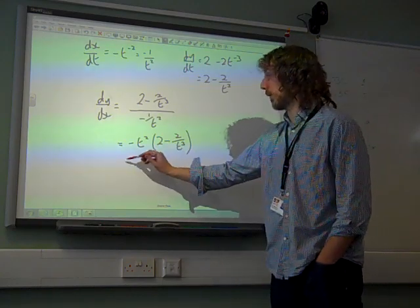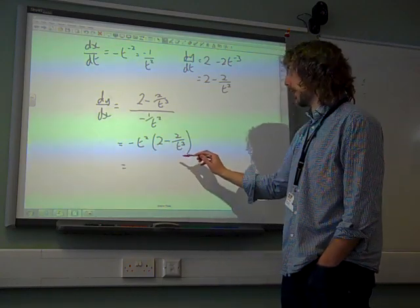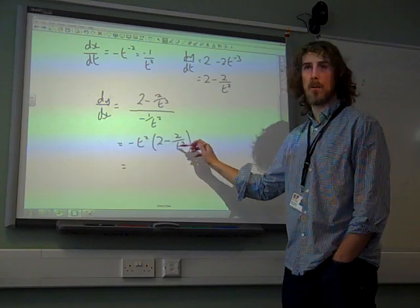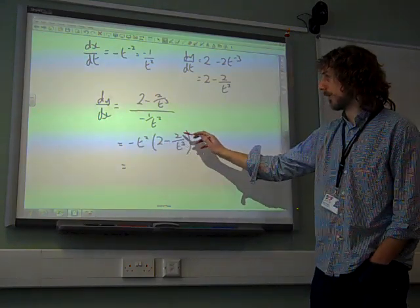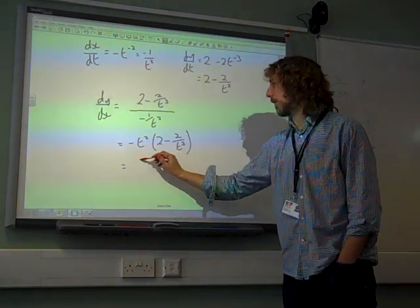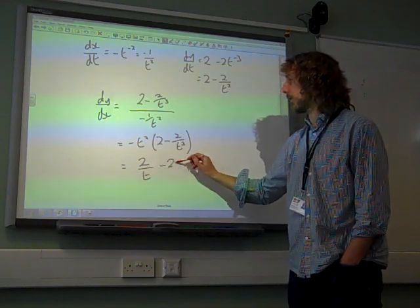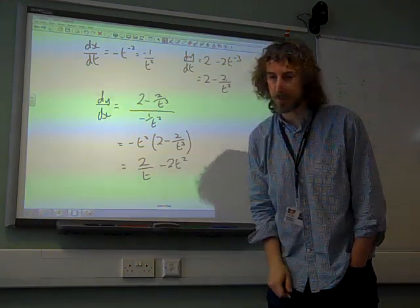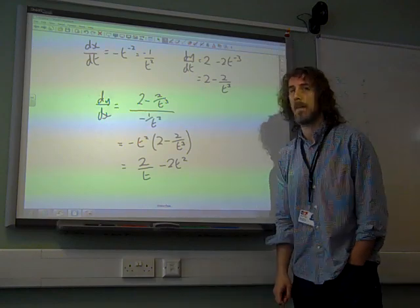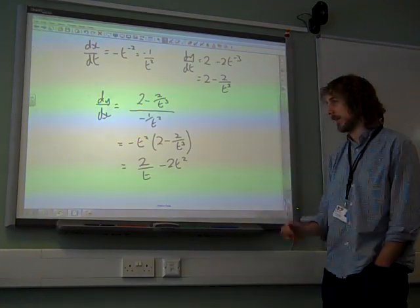That's probably enough simplifying right there. I think I went a little bit further with this and said if we multiply this out, it's minus t squared times 2 minus 2 over t cubed. So that's plus 2 over t minus 2t squared. I think that was how I left my answer. And that's quite neat. Certainly neat enough.